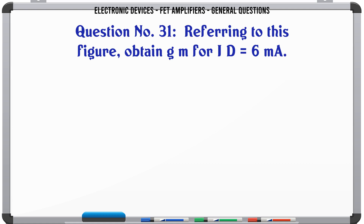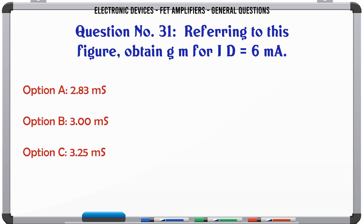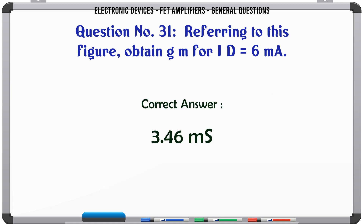Referring to this figure, obtain GM for ID = 6mA. A. 2.83mS. B. 3.00mS. C. 3.25mS. D. 3.46mS. The correct answer is 3.46mS.